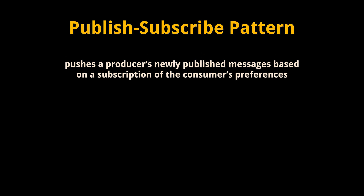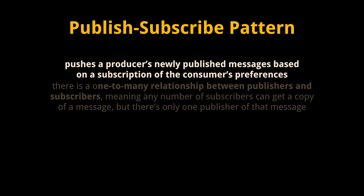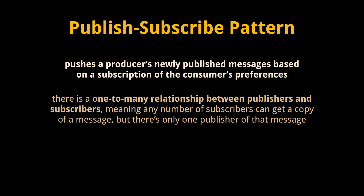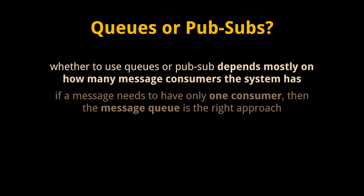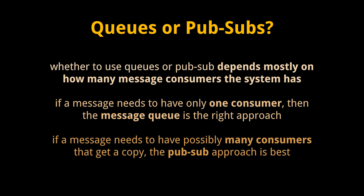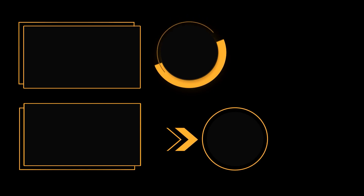On the other hand, the publish-subscribe pattern, also called pub/sub, pushes a producer's newly published messages based on the subscription of the consumer's preferences. There is a one-to-many relationship between publishers and subscribers, meaning any number of subscribers can get a copy of a message, but there's only one publisher of that message. Pub/sub doesn't guarantee message order but guarantees that consumers will only see messages they've subscribed to. Many social networks use parts of the pub/sub model — they call it following users. Whether to use queues or pub/sub depends on how many consumers the system has: if a message needs only one consumer, use a message queue; if it needs many consumers, use pub/sub.